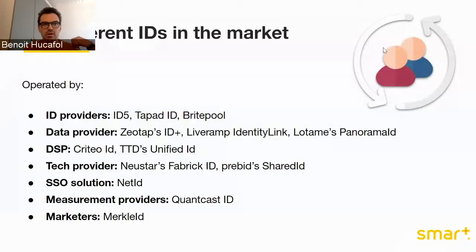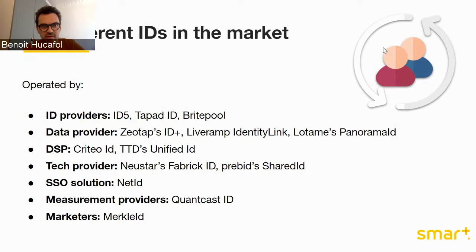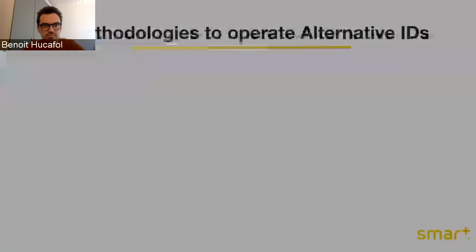That's why it's sometimes hard to call them universal, because there are more than 20 different IDs positioning as alternative IDs in the market, operated by different players. There are pure ID technology players like ID5 and Brightpool. Data providers have also created their own alternative IDs, like LiveRamp, Zeotap, or Lotame. Some DSPs have created their own ID — especially Criteo, but also The Trade Desk with the Unified ID. And other players like tech providers, single sign-on solutions, and measurement companies have also created their own alternative IDs.